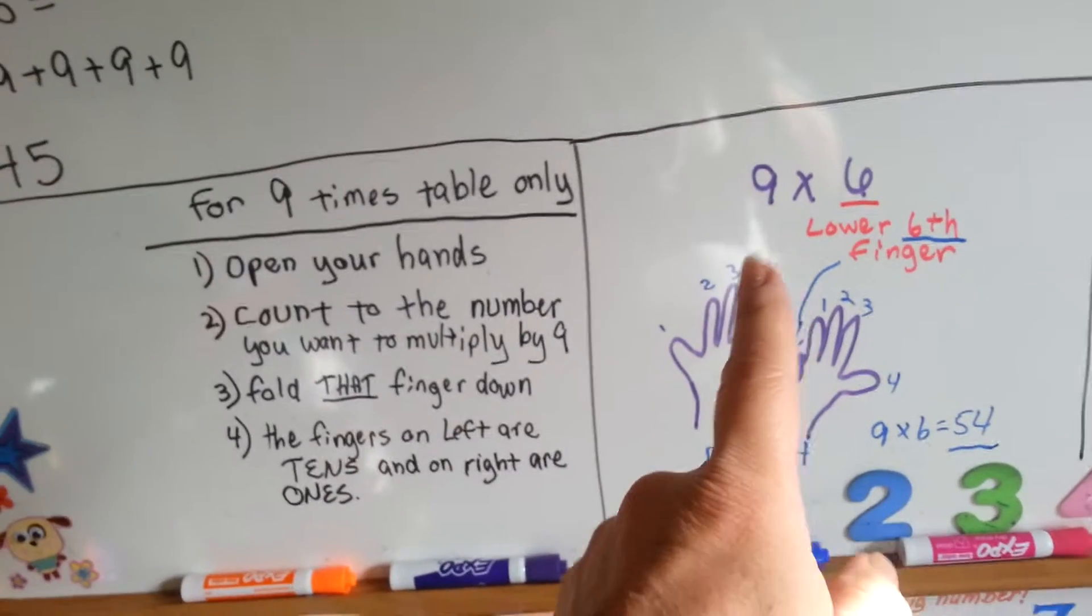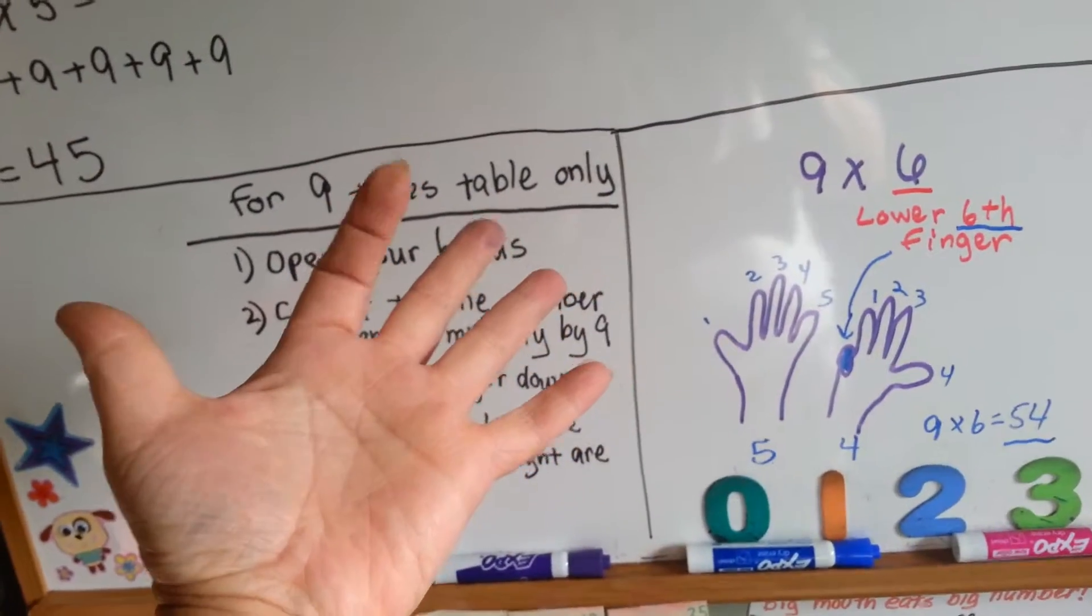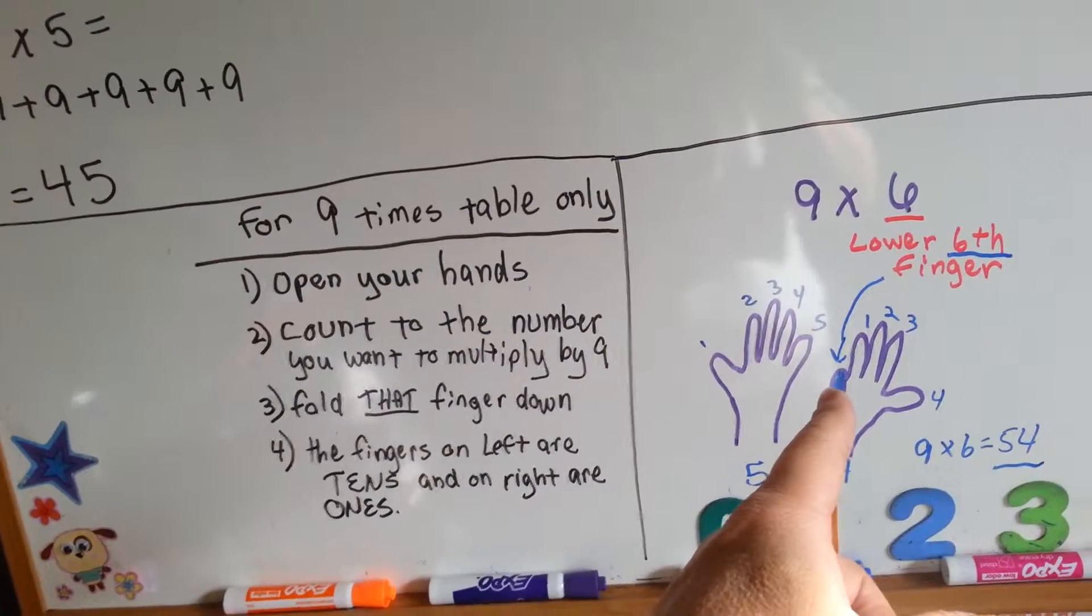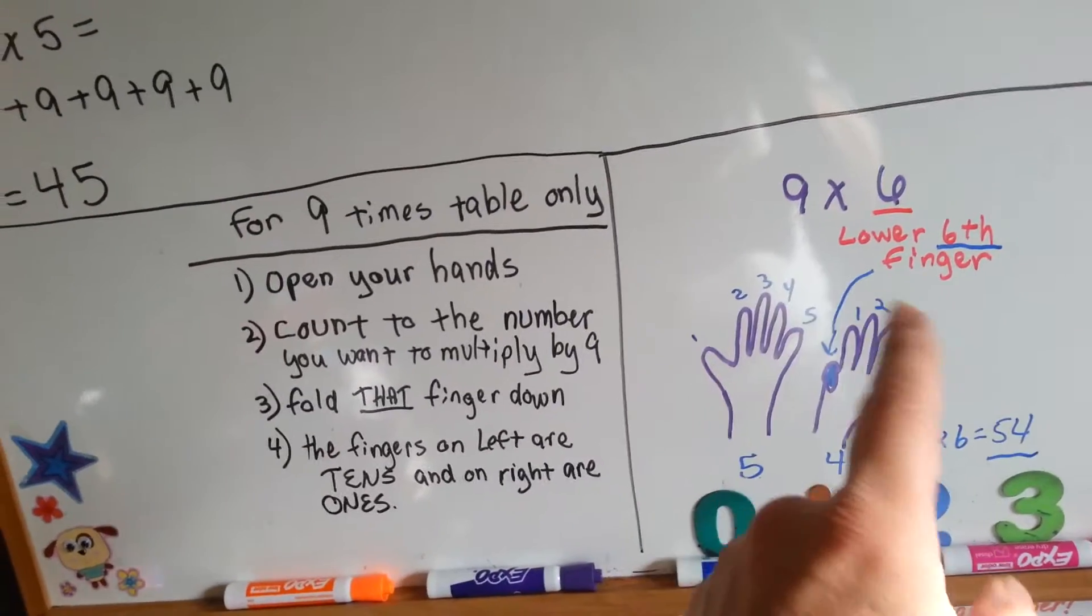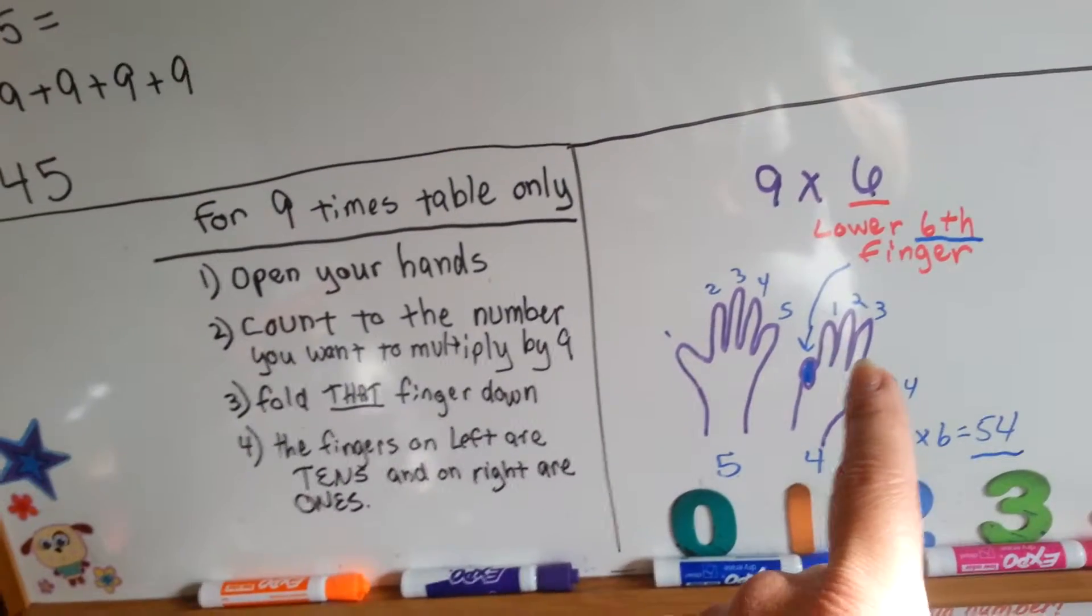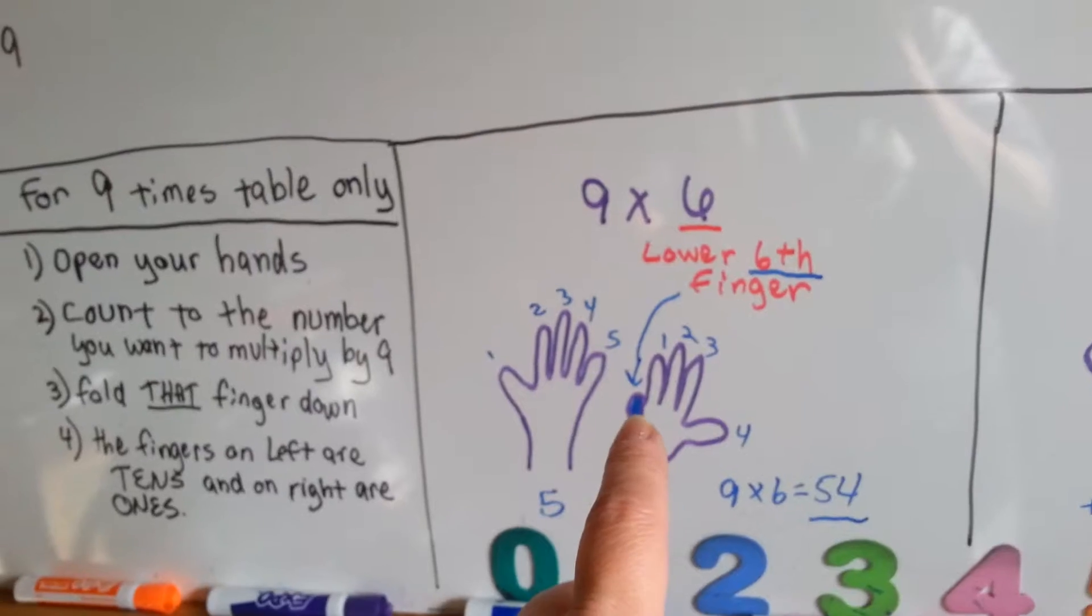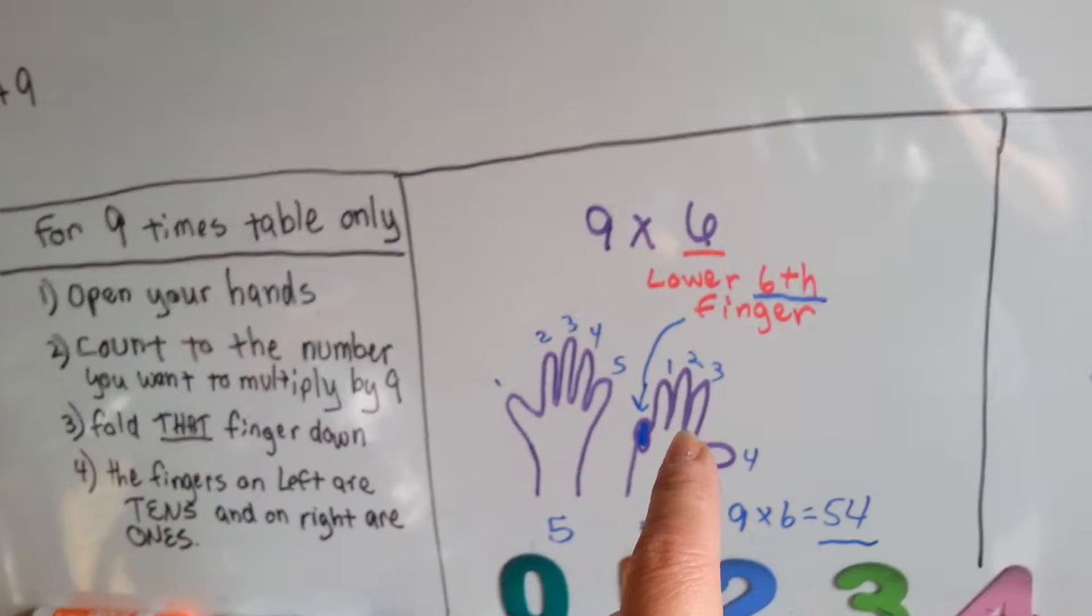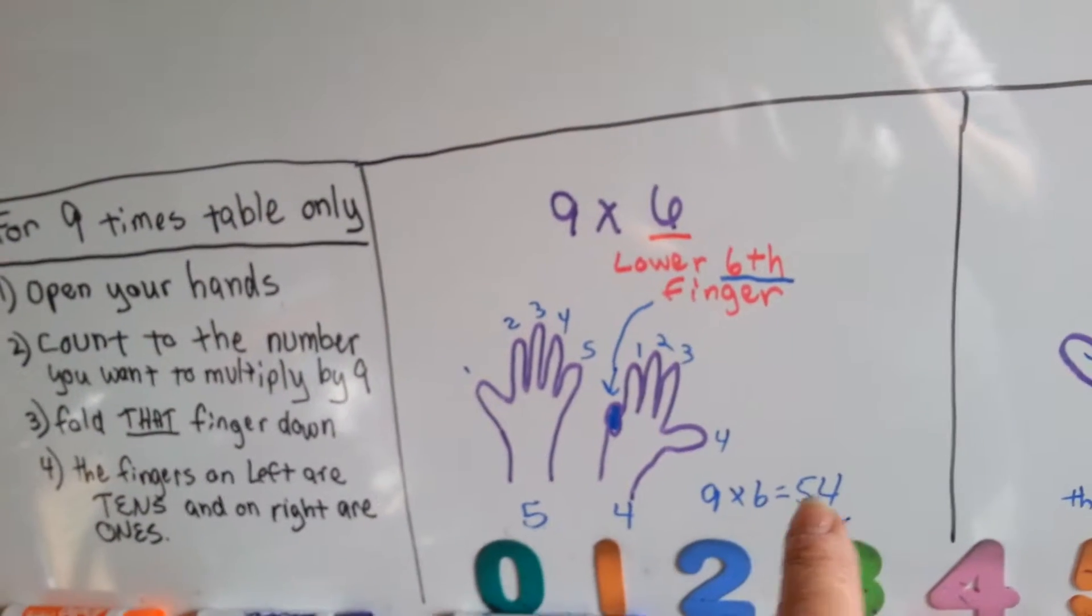You open your hands and you count to the number you want to multiply by 9. So, let's say we're going to do 9 times 6. You count those fingers 1, 2, 3, 4, 5, and then this little pinky on the next hand would be the 6th finger. And you fold it down. The fingers that are up, this hand is the tens and this hand is the ones and gives you the answer to the 9 times table. So, that's the 6th finger. How many fingers are up on the ten side? 1, 2, 3, 4, 5. How many are up on the one side? 4. 9 times 6 is 54.